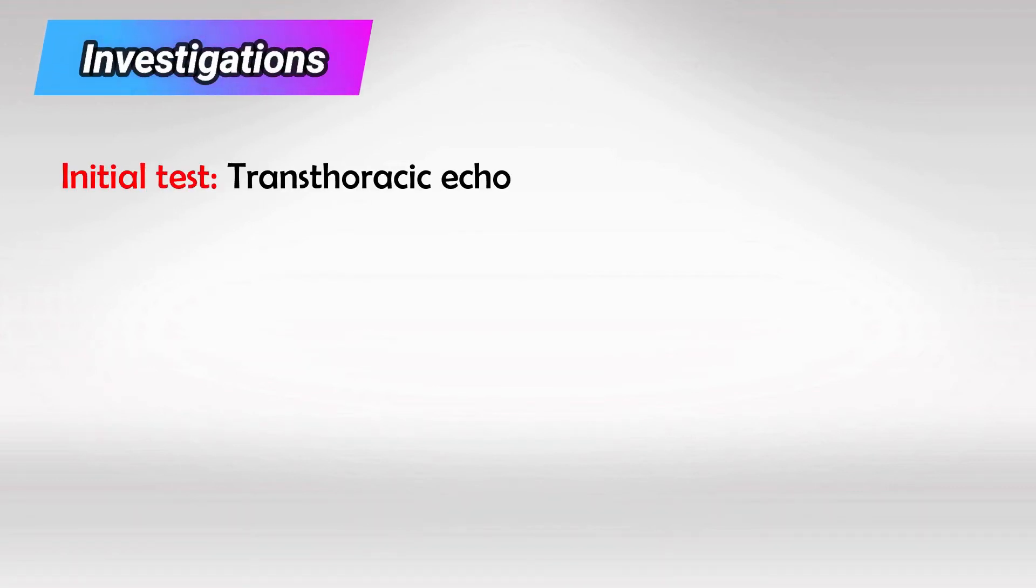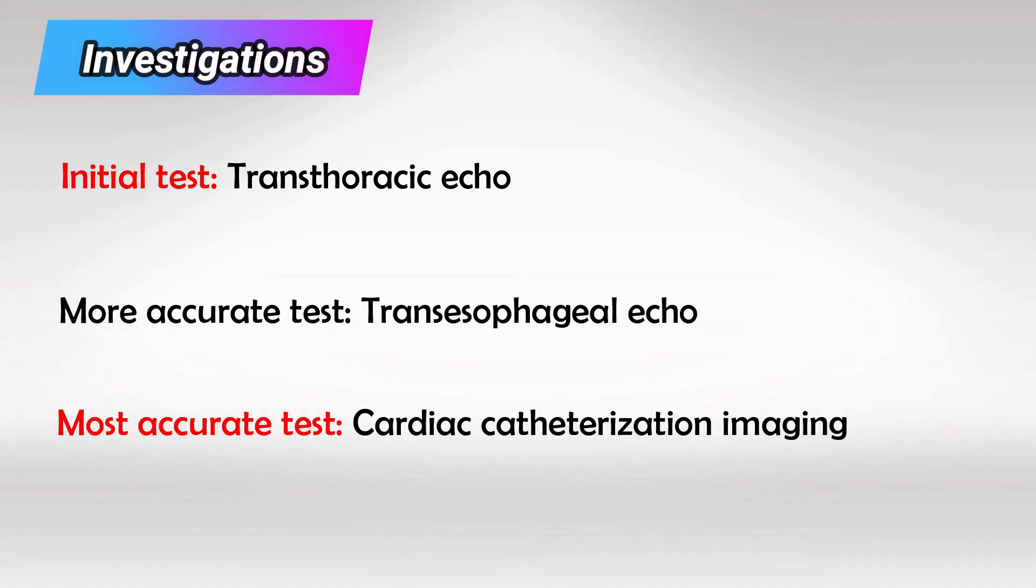As with all cardiac murmurs, transthoracic echo is the initial test, transesophageal echo is better, and catheterization is the most accurate test.